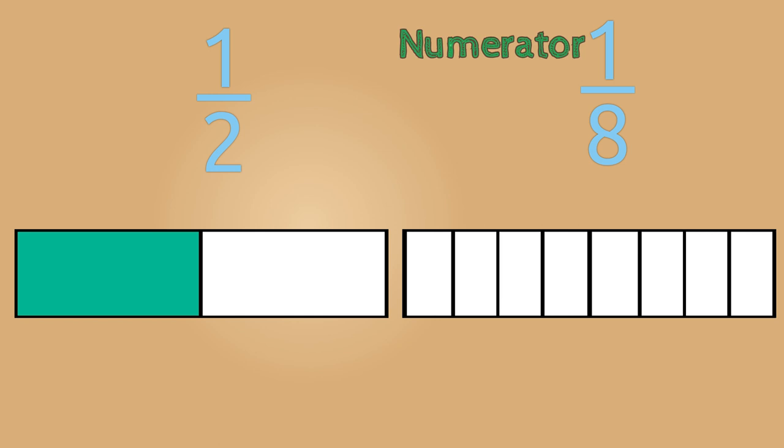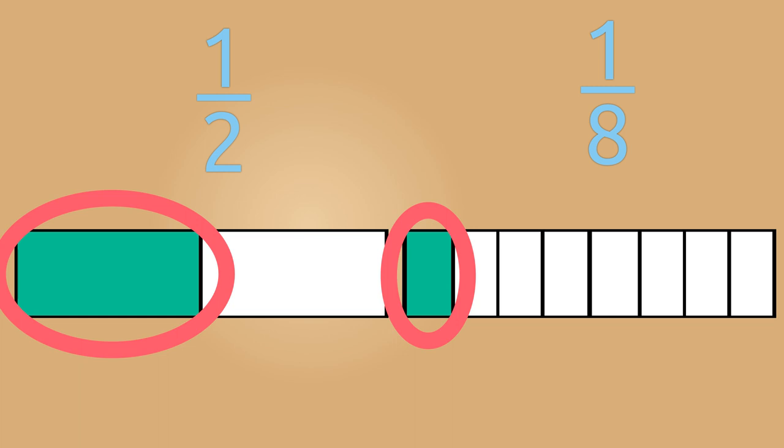And since our numerator is 1, we can shade one of the fractional parts to represent 1 eighth. If we compare the quantity of the shaded area in both 1 half and 1 eighth, we can clearly see that 1 eighth is less than 1 half.